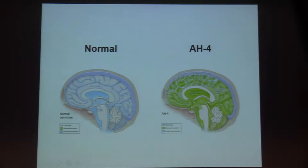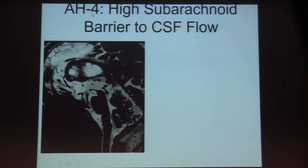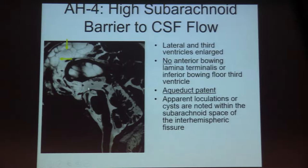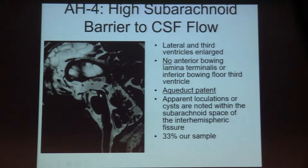Moving on to AH4: these are patients where there appears to be some obstruction in the interhemispheric fissure between the hemispheres. In an AH4 case, the lateral and third ventricles are again enlarged, but there is no anterior bowing of the lamina terminalis or downward bowing of the floor of the third ventricle — this is a normal third ventricular morphology. Note the loculations or honeycombing appearance in the interhemispheric fissure. We can begin to see this with high-resolution imaging; you need higher spatial resolution to detect changes like these in the subarachnoid space.